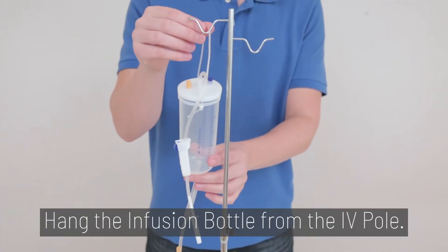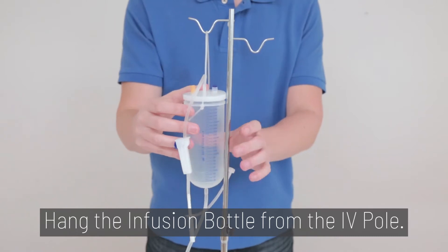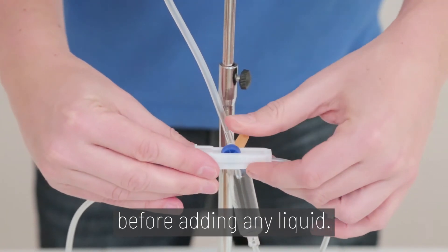Step 3. Hang the infusion bottle from the IV pole. Make sure the roller clamp is closed before adding any liquid.